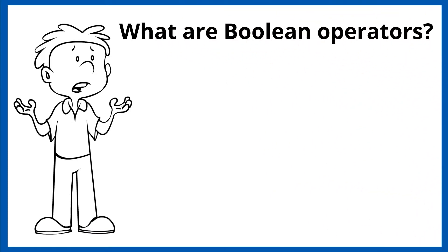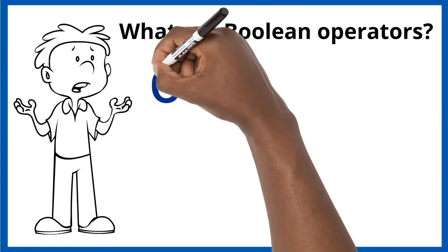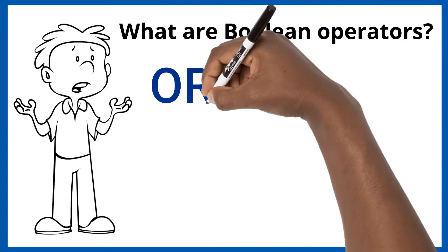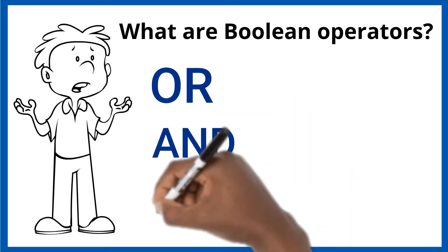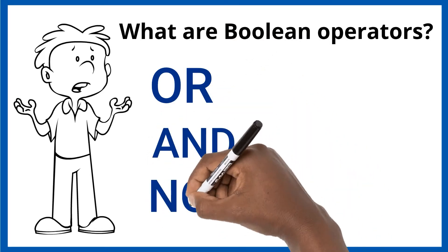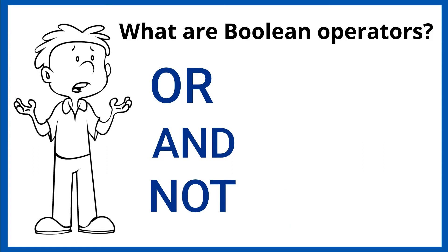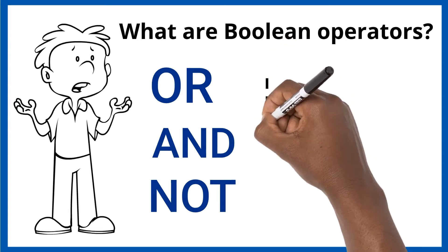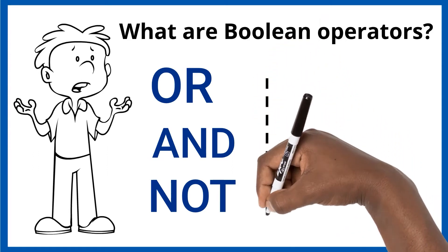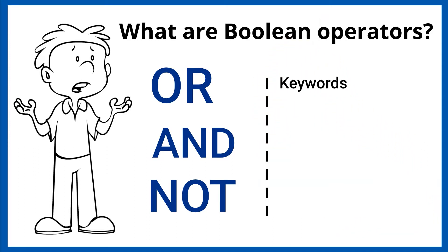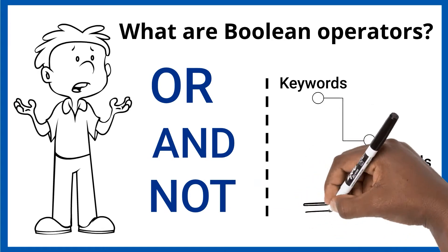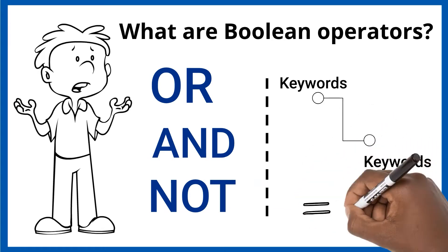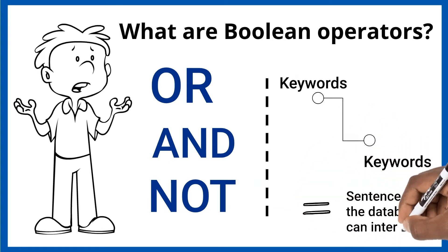When a user generates a search on an online platform, the words or, and, and not are effective operators to assist in making more effective searches. Boolean operators link users' keywords into sentences that the database can interpret.